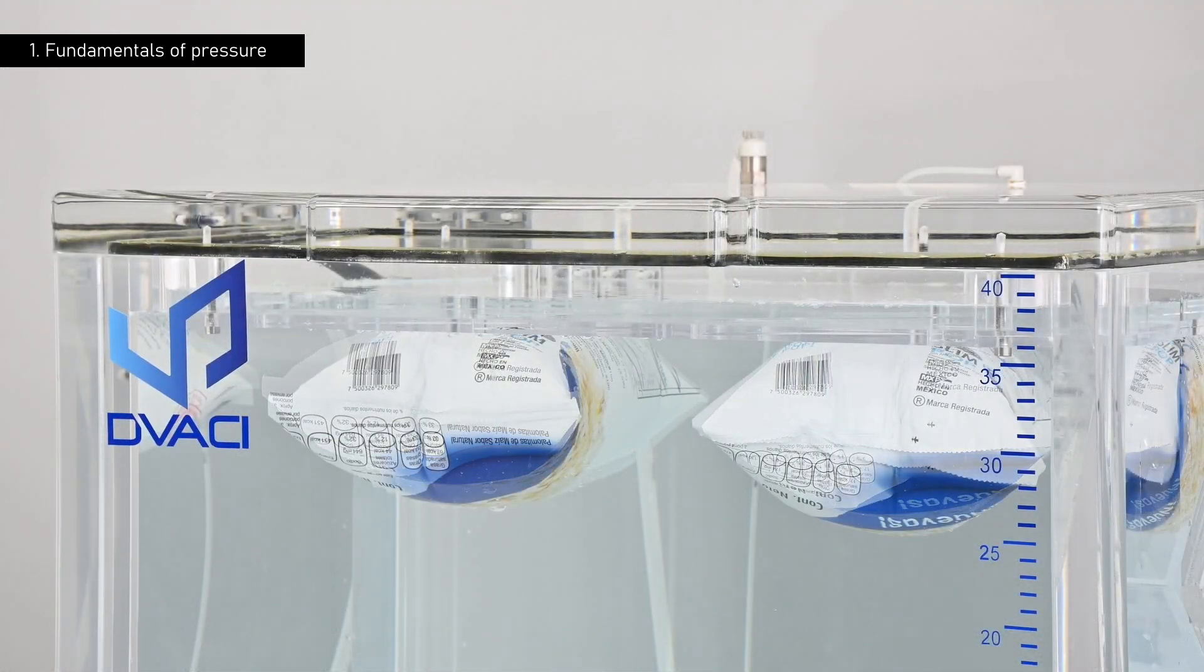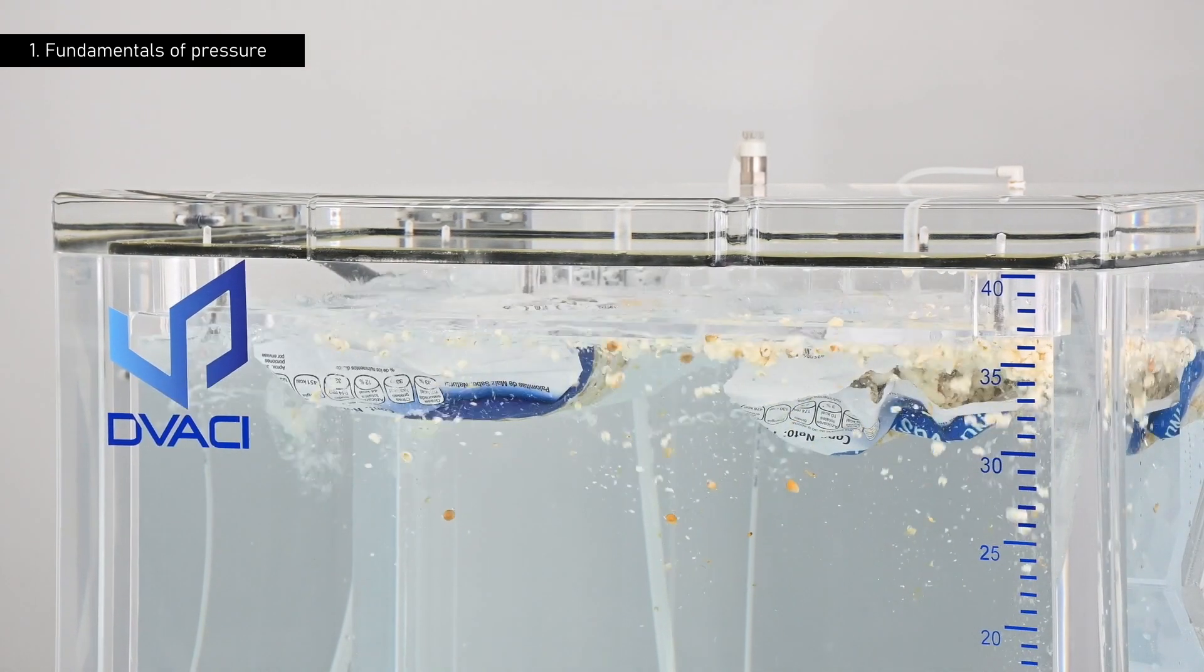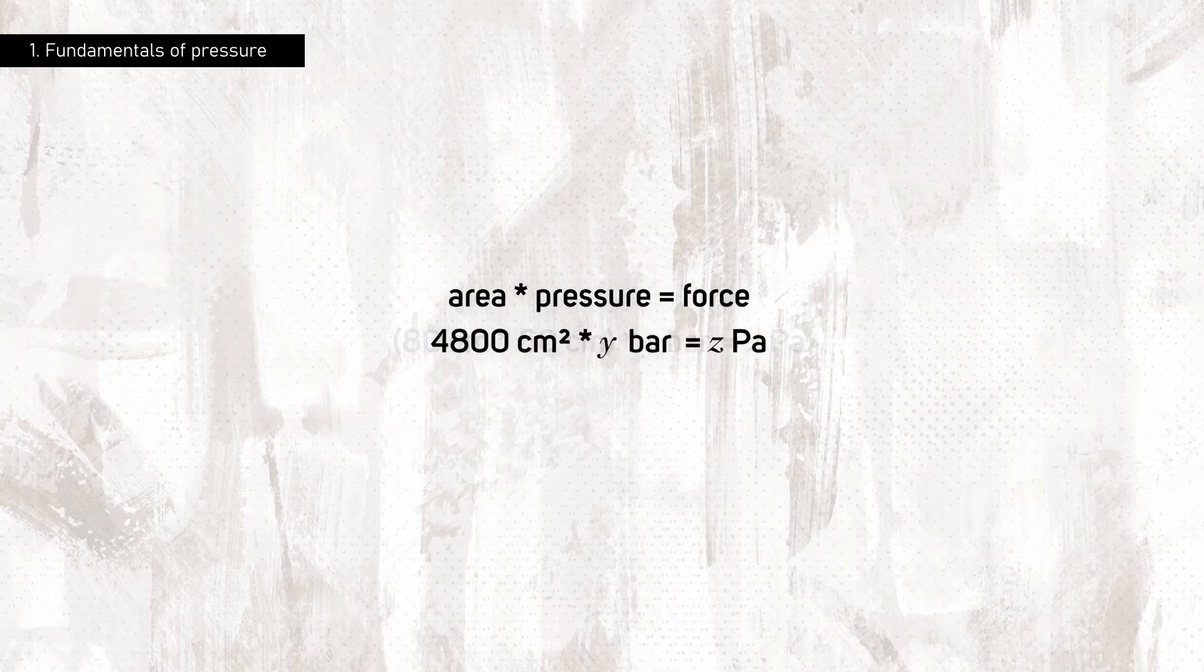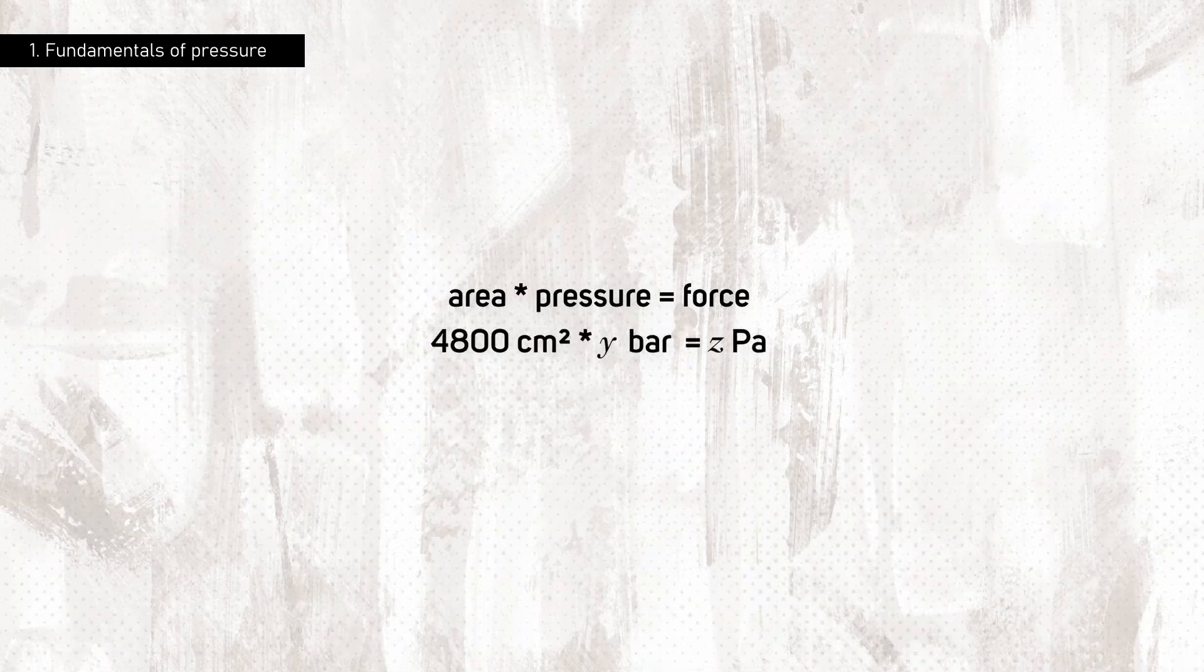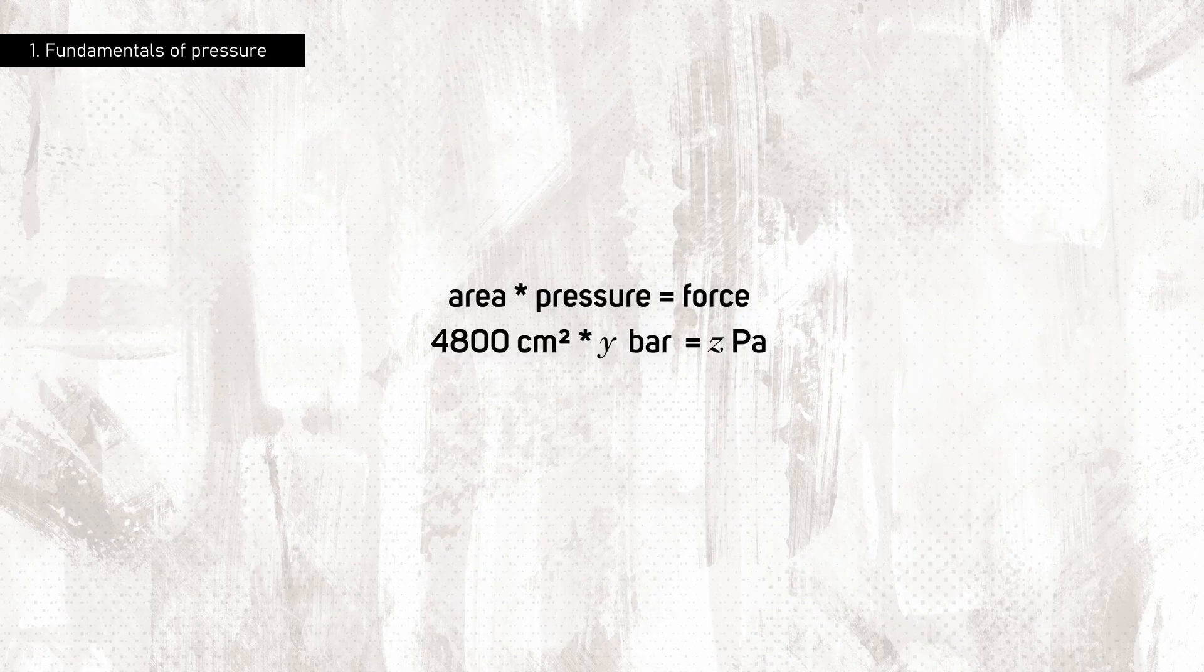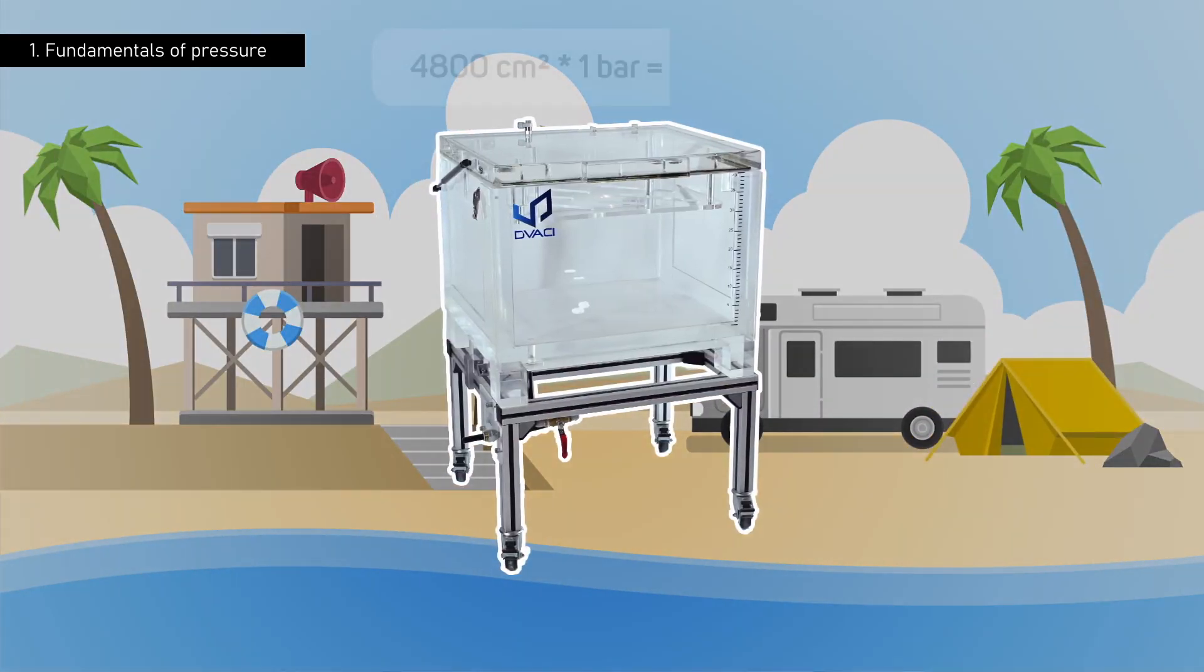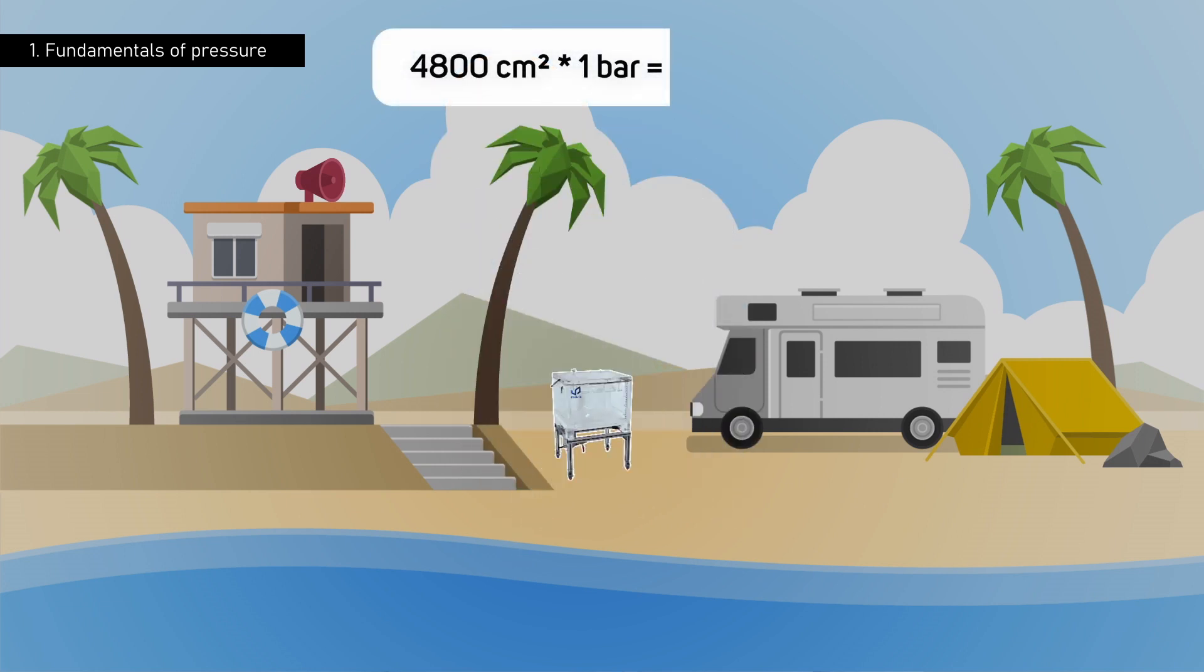Now, let's apply this calculation to our largest vacuum chamber, the CDV6. The lid of this impressive equipment is a rectangle of 80 by 60 centimeters, giving us a total surface area of 4,800 square centimeters. Suppose the equipment is at sea level, where the atmospheric pressure is around one bar, and that we manage to create a perfect vacuum inside the chamber.